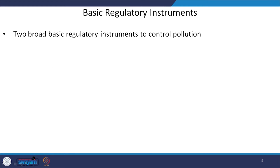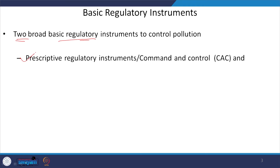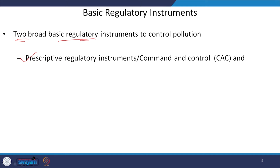First of all, we will understand the basic regulatory instruments. As you understand, we have two broad categories of regulatory instruments to control pollution. These two forms are prescriptive regulations — also known as the command and control approach — and the second one is the market-based instruments.